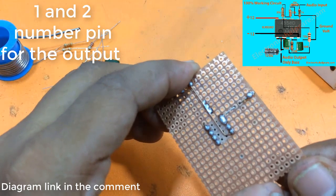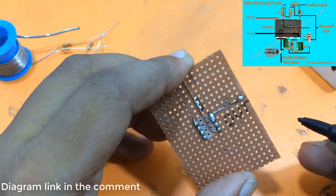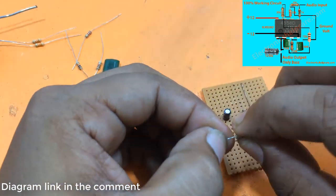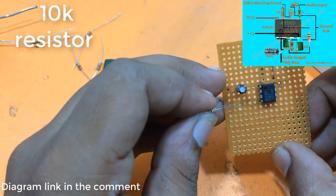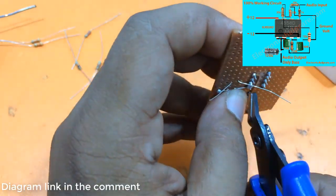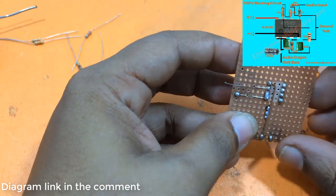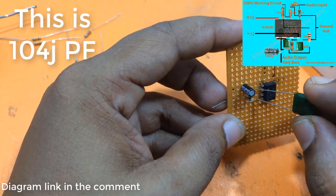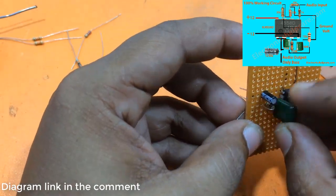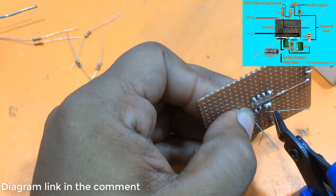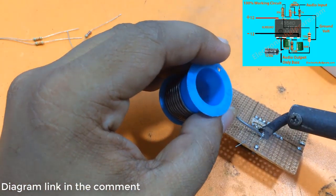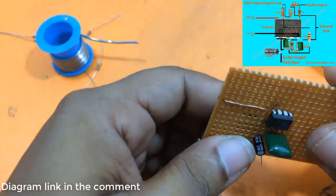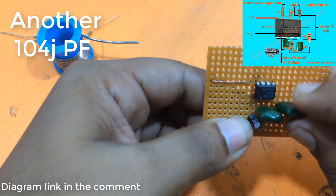1 and 2 number pin for the output. 10K resistor. This is 104 JPF. Another 104 JPF.